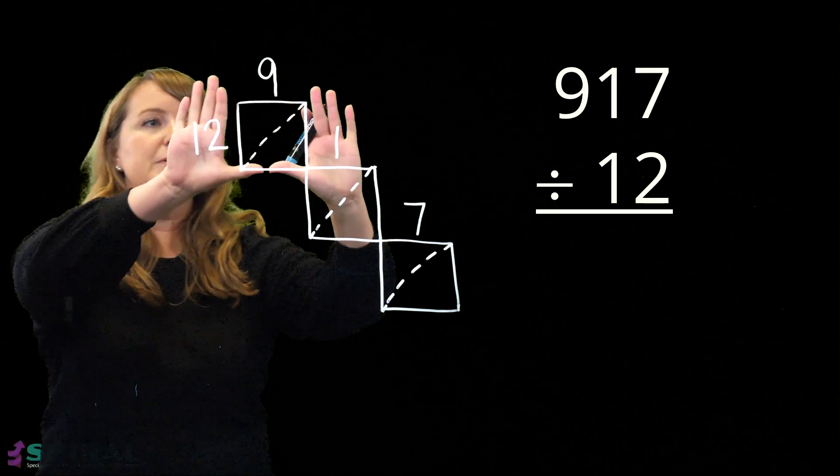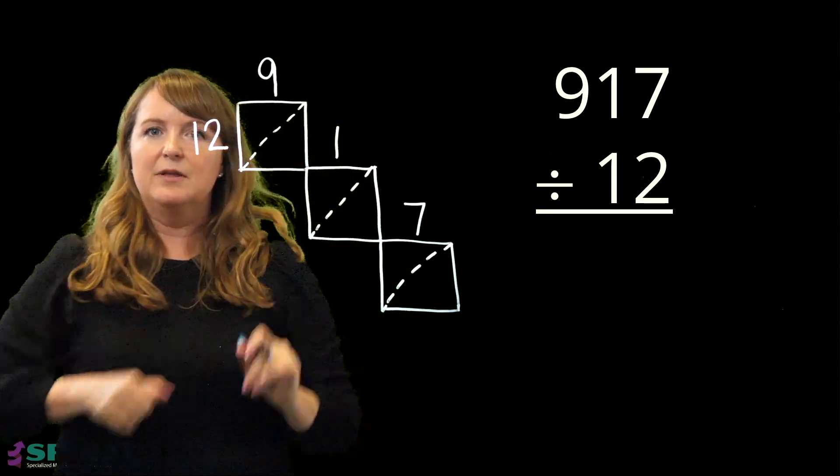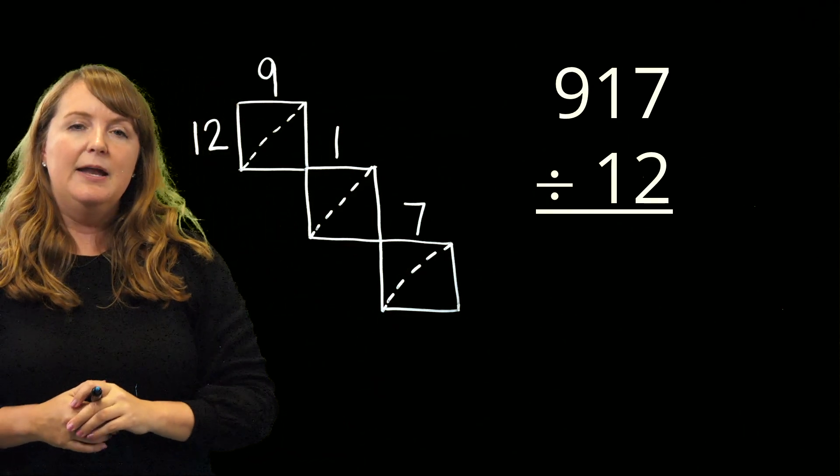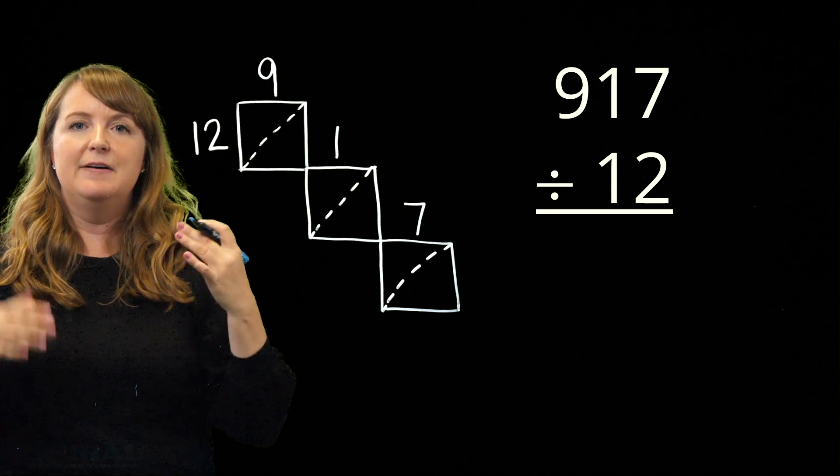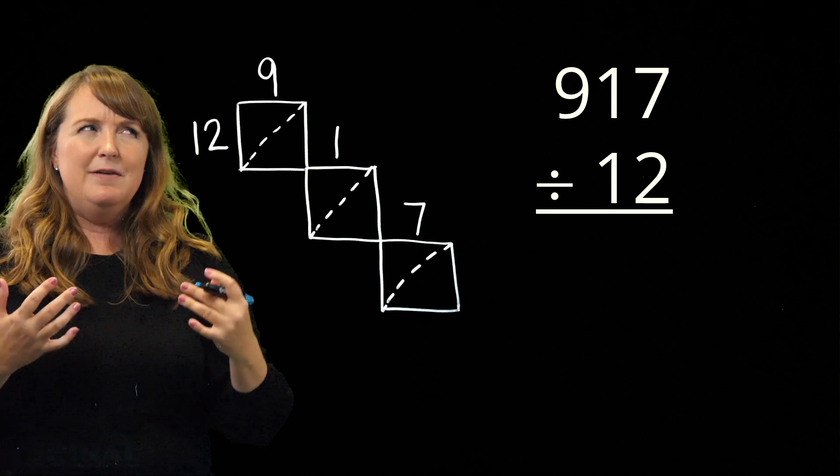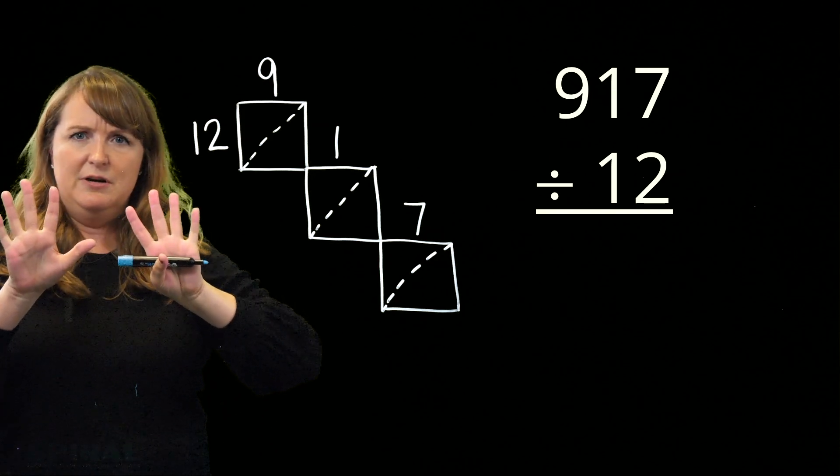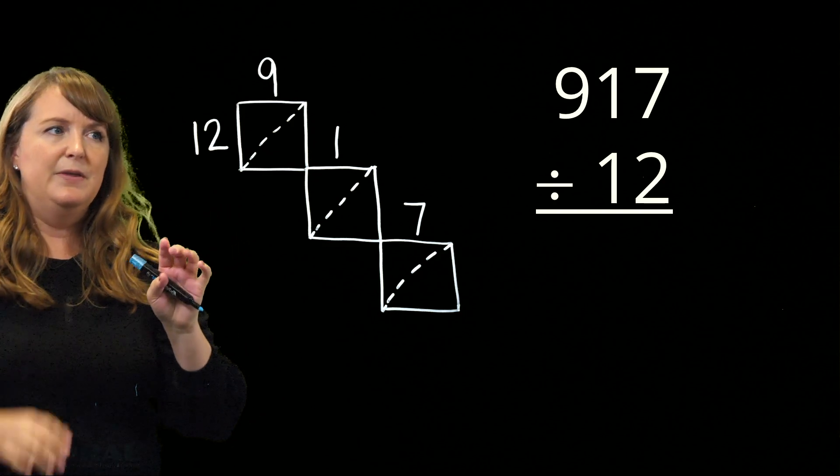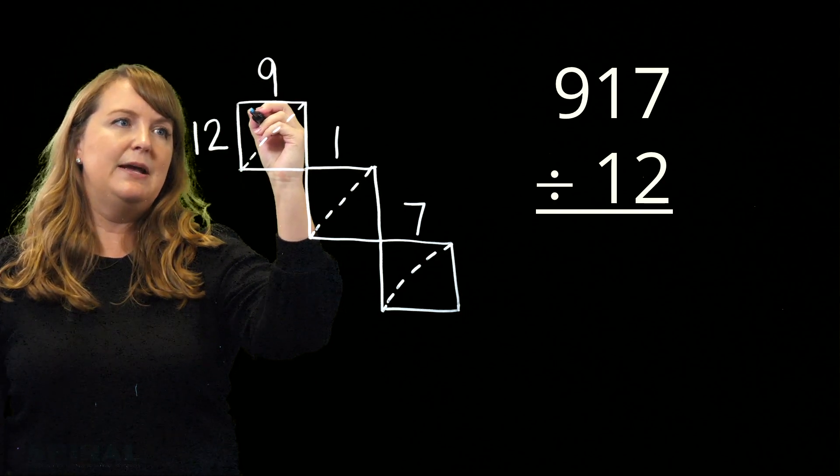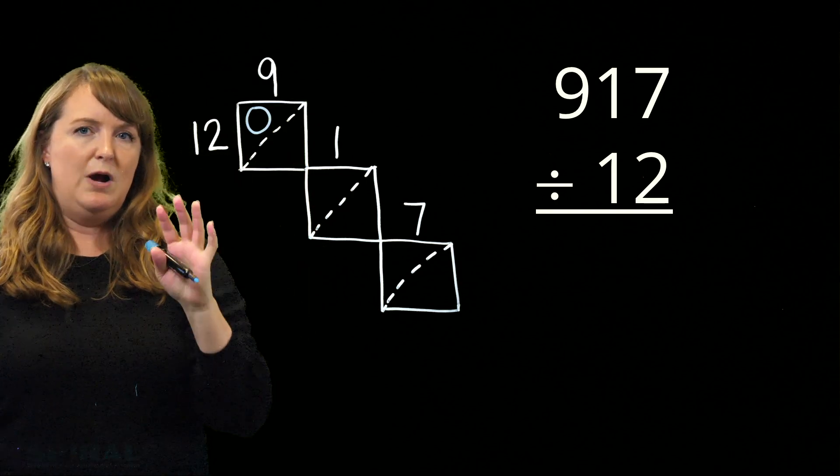So first I'm going to focus here on this square right there that represents 9. And I'm going to ask myself, how many groups of 12 can I make if I have 9? Well, if I had 9 fingers right there, I can't make a full group of 12. So in the space above the lattice, I can make 0 groups of 12.